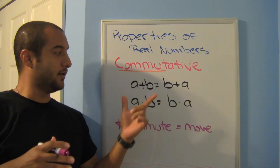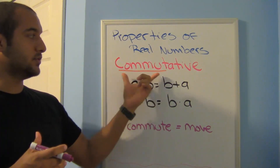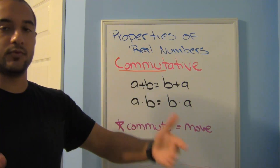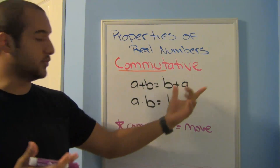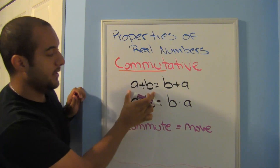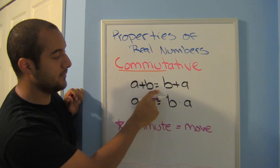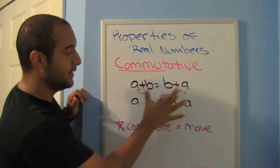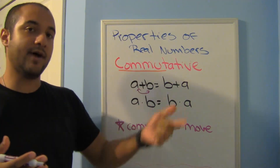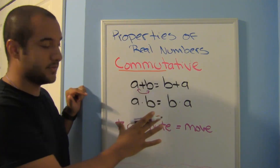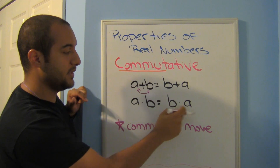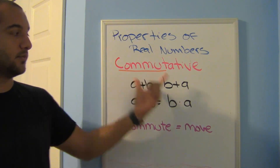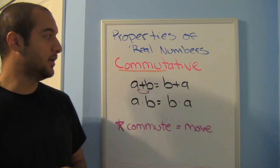The commutative property applies to addition and multiplication. The root word is 'commute,' which means to move — just like the morning commute shows how traffic is flowing. In the commutative property: a plus b is the same as b plus a. All you do is switch them and they're still equal. That's why 2 plus 5 is the same as 5 plus 2. For multiplication: a times b equals b times a — 2 times 3 is the same as 3 times 2; you get 6 either way.